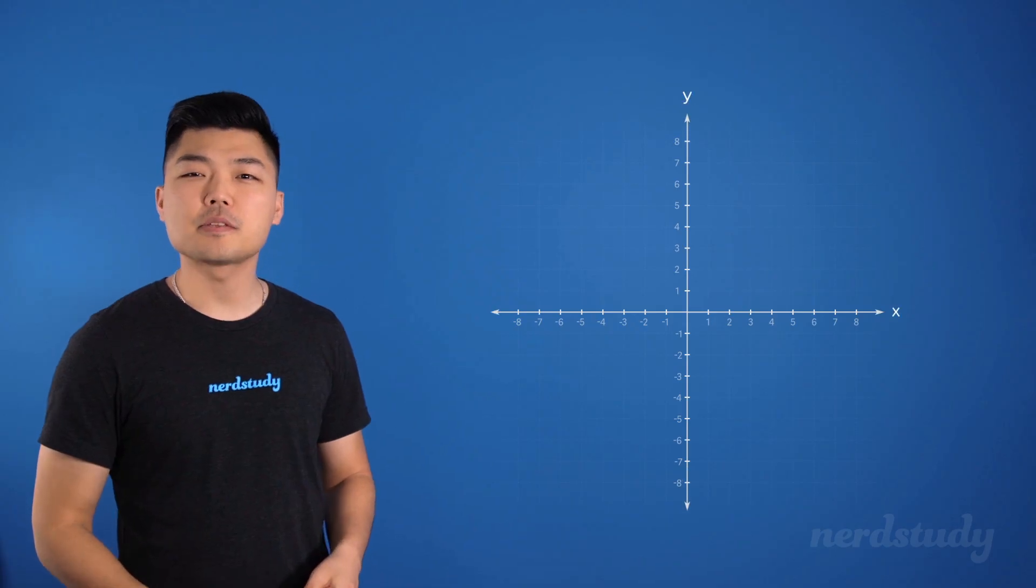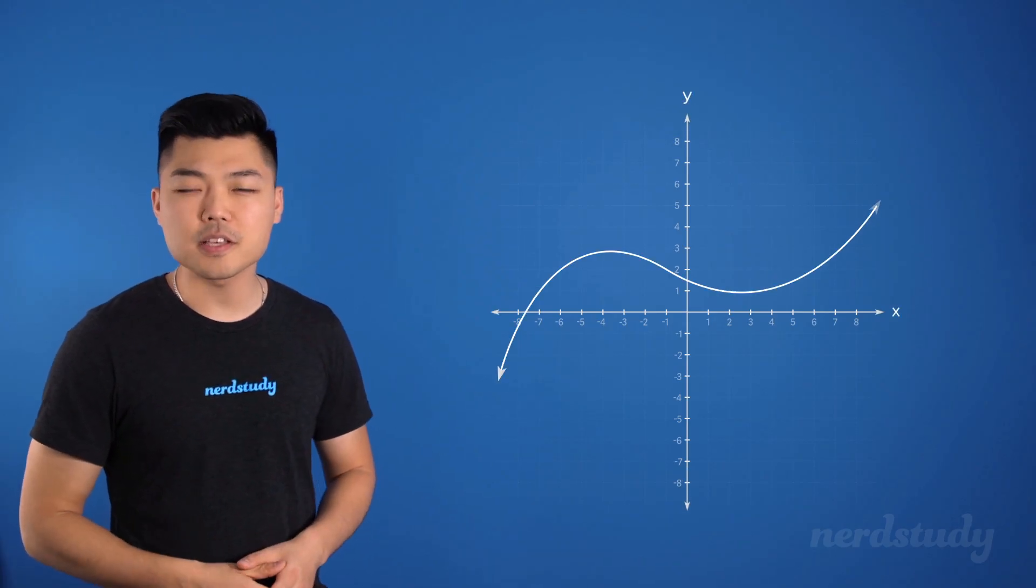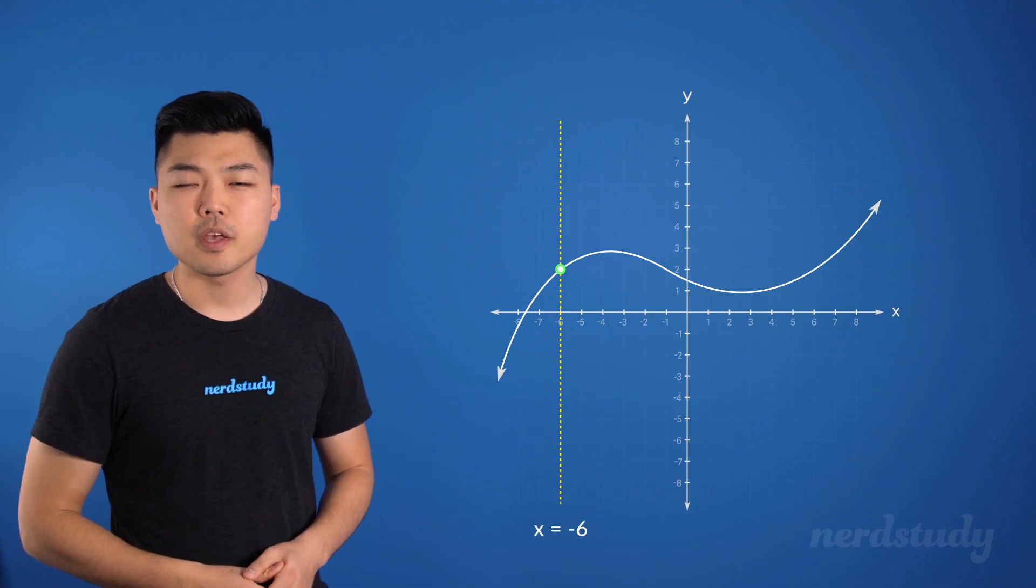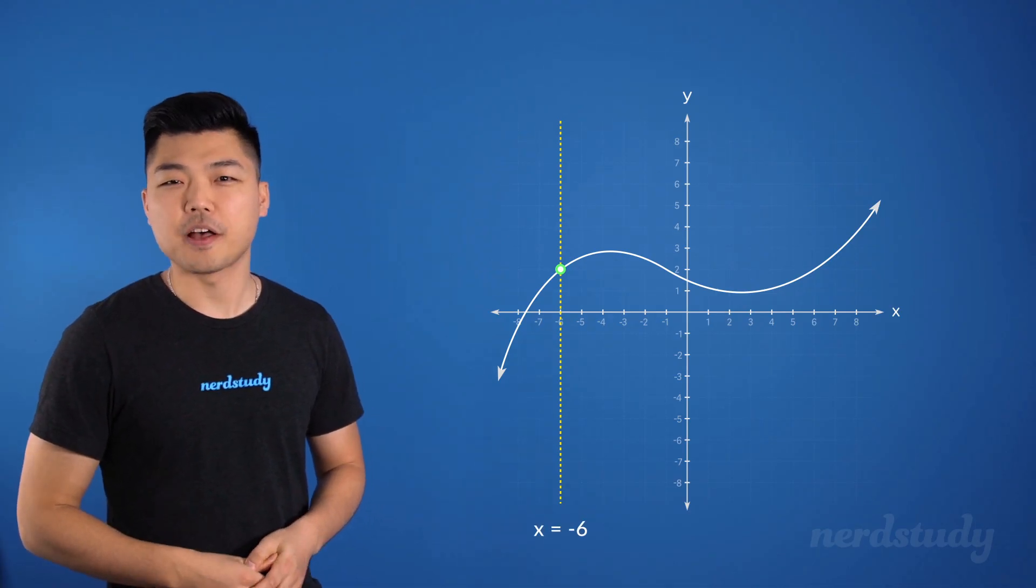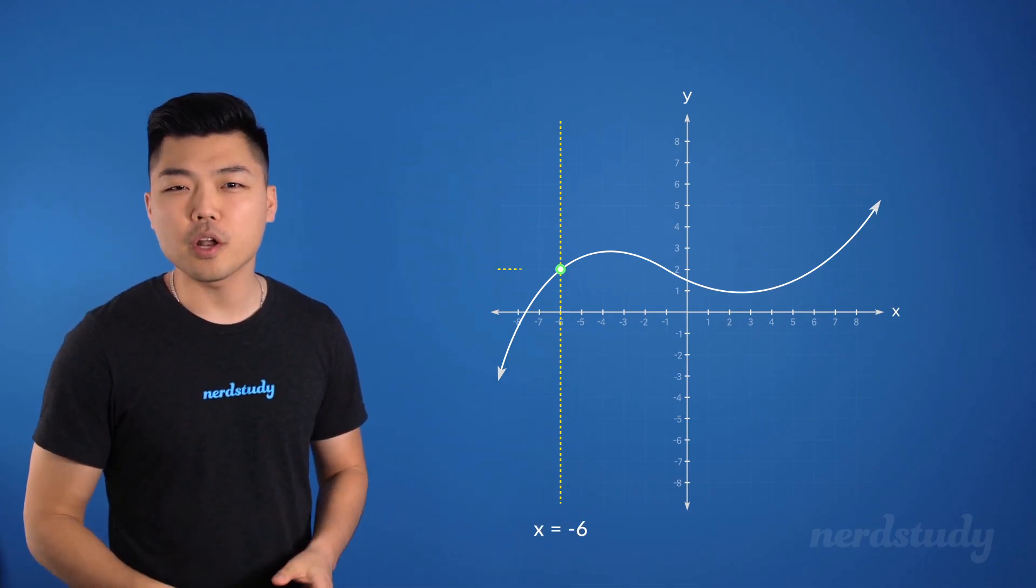So the reason why the vertical line test helps is that drawing a vertical line is like fixing an x value. At one particular x value, there should be only one y value.